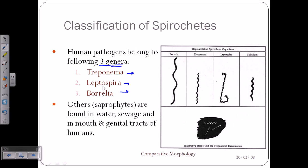Others are found in water, sewage, and in the mouth and genital tract of humans. They are present in environmental regions — found in water and sewage if not properly treated. They can also be found in the mouth and genital tracts and are associated with many STDs or sexually transmitted diseases, making them very important to study.